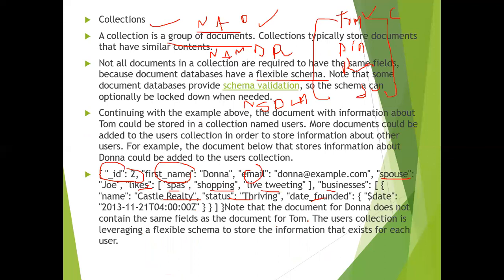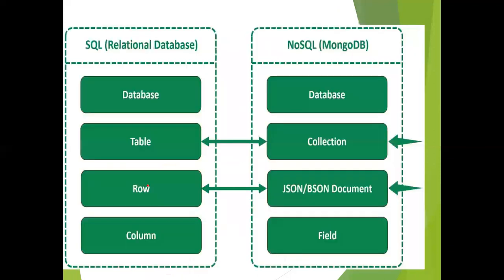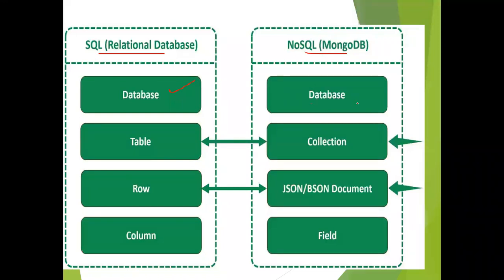There is no rule that every document should have the same schema. Comparing relational and MongoDB terminology: in a relational database we say 'database'; in MongoDB we also say 'database'. In a relational database we say 'table'; in MongoDB we say 'collection'. A row is called a document in MongoDB, and a column is called a field.